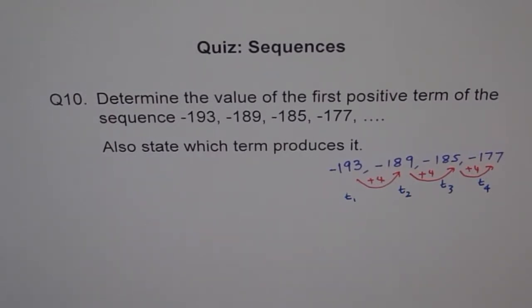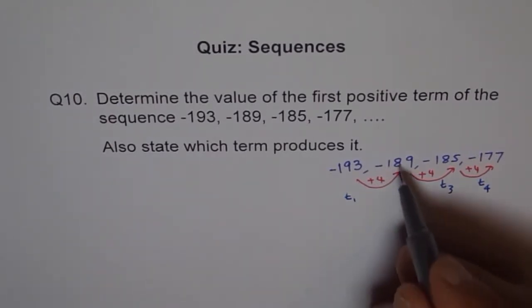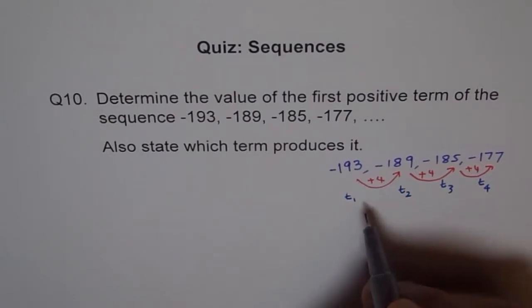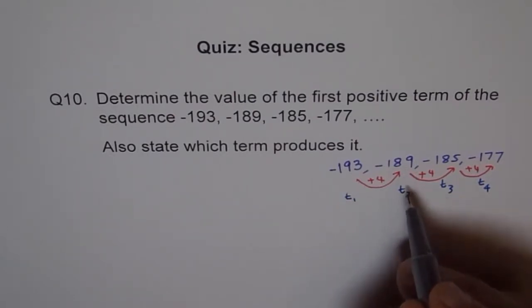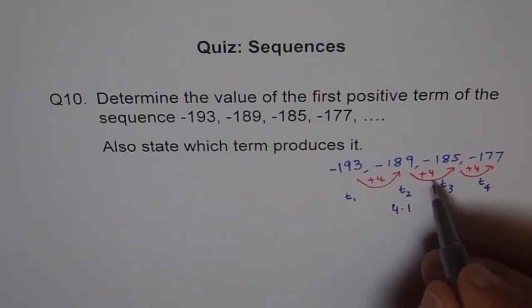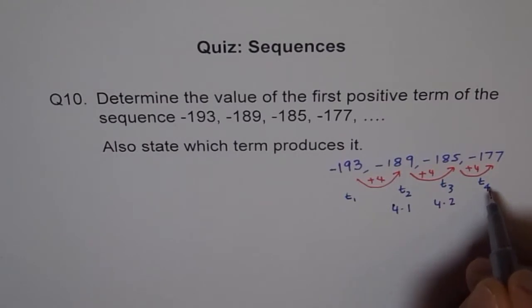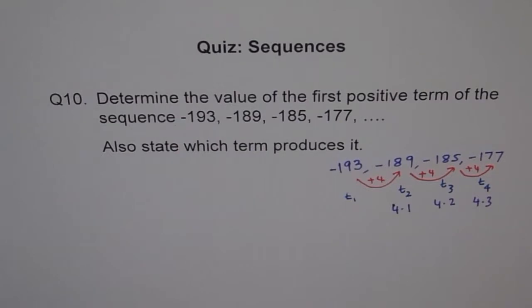Now if you go to term number T1, how many from T1 to T2, how many times do you add 4? One times. So let me say 4 is added 1 times. How many times is 4 added when you go to T3? 4 is added 2 times. And when you go T4, then 4 is added 3 times.